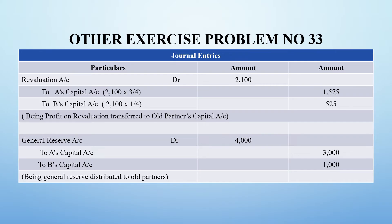Next is General Reserve. General Reserve does not go directly to capital account. The reserve amount that has been set aside will be taken out by old partners in their old profit sharing ratio. So General Reserve Account debit, to A's Capital and to B's Capital. Capital accounts will be credited.